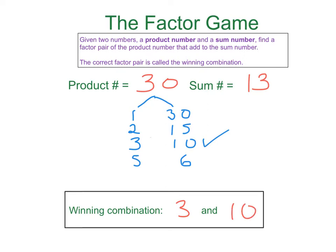Now one thing you need to know about the factor game is that if you find a winning combination, that will be the only one. There never are two different winning combinations. Well, we could write it 10 and 3, but really that's the same.